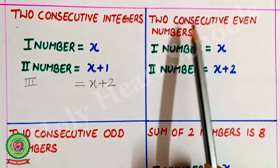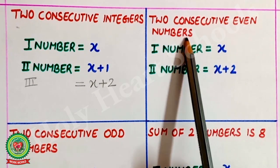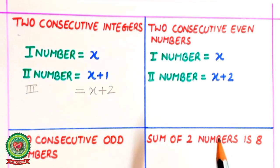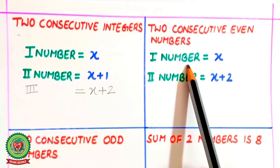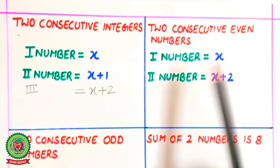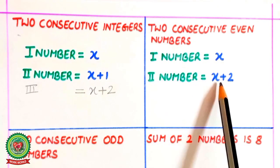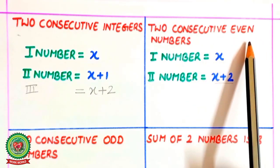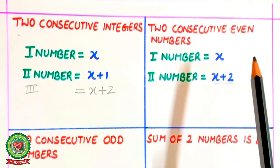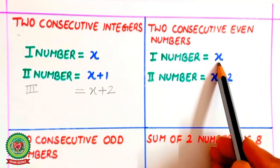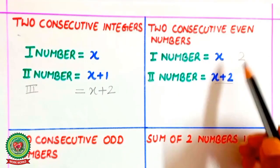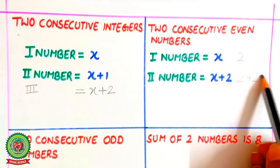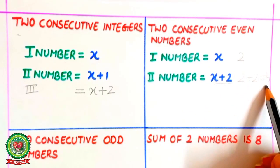For two consecutive even numbers, the first number is x, so the second number is x plus 2, because in case of even numbers the gap of 2 is there. For example, if the value of x is 2, then 2 plus 2 equals 4, and 4 is also an even number.